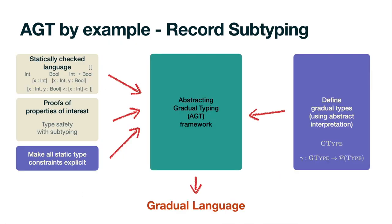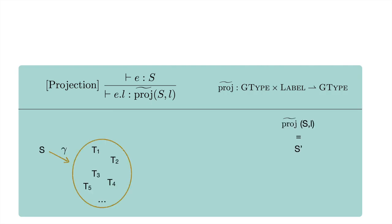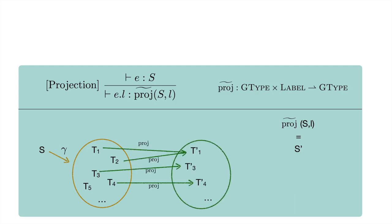With these definitions of types and especially the concretization function, AGT provides a mechanical process to derive a gradual language. For example, we can now mechanically derive a gradual typing rule for projection by introducing a gradual version of the proj function. Starting from a gradual type, we extract its meaning via the concretization function. On this set of static types, we apply point-wise the static proj function to each type, obtaining a new set of static types. We summarize the resulting set via an abstraction function from sets of static types to gradual types. We will use yellow arrows wherever we refer to a concretization function, and cyan arrows wherever we refer to an abstraction function.